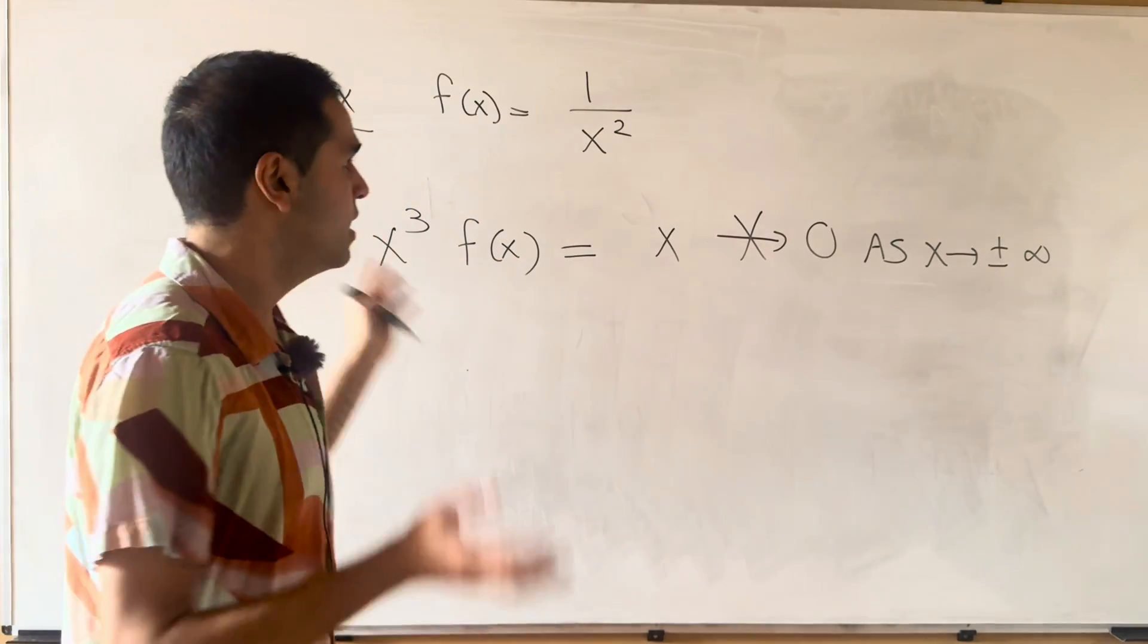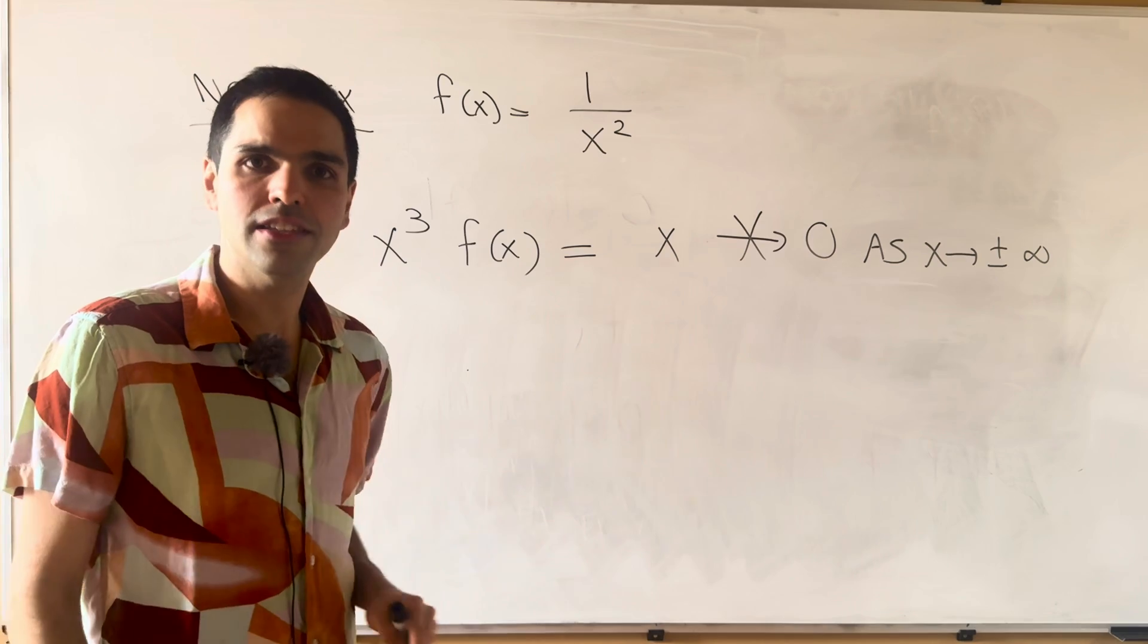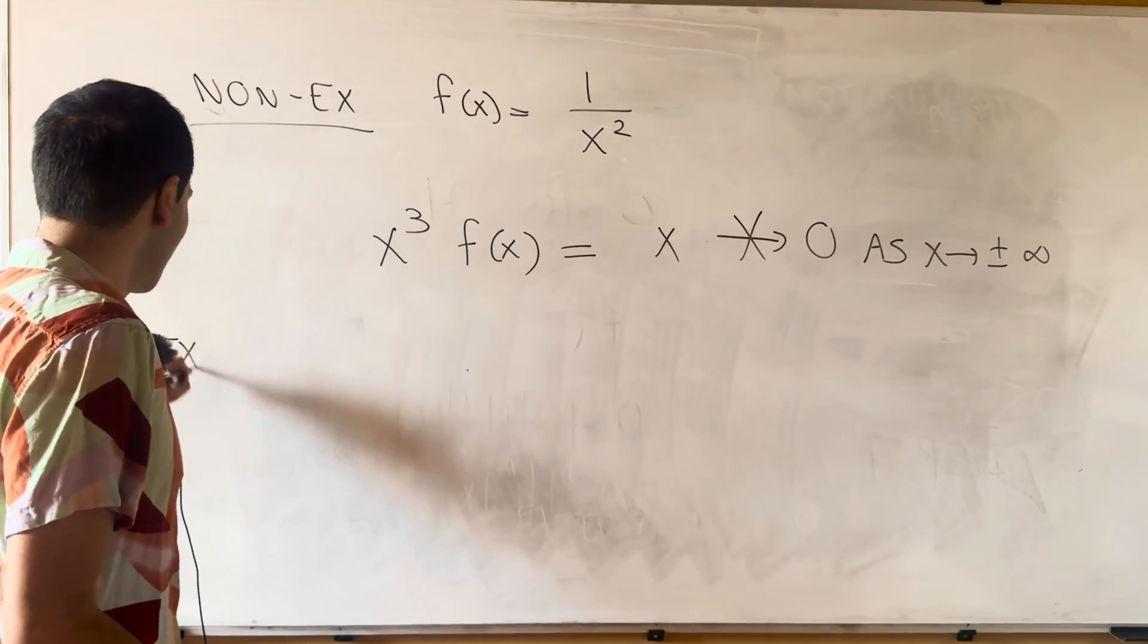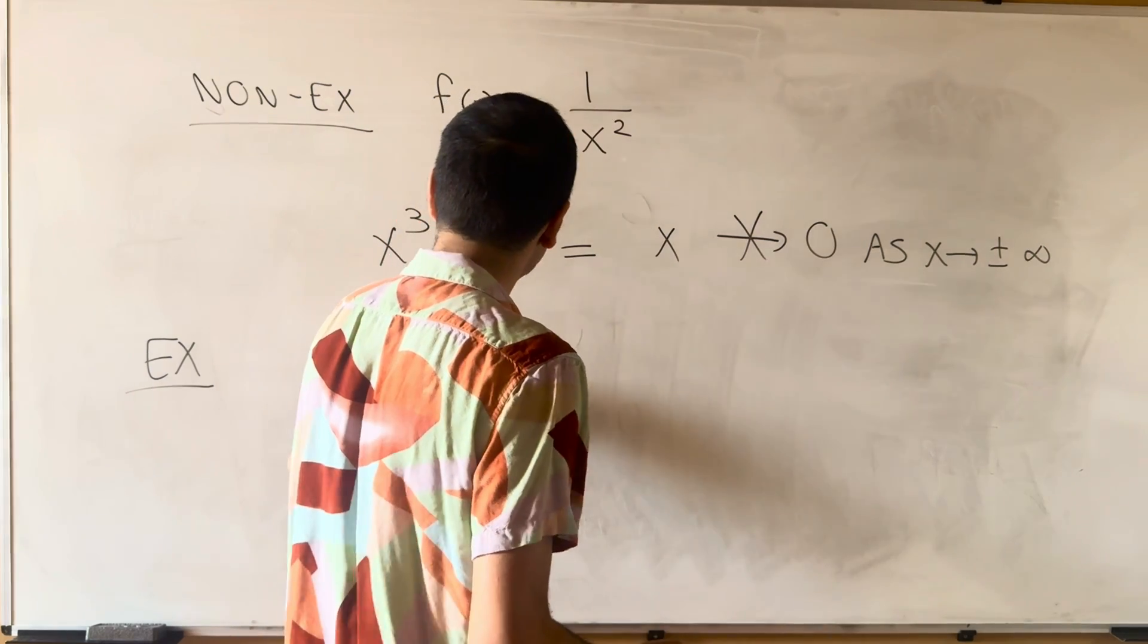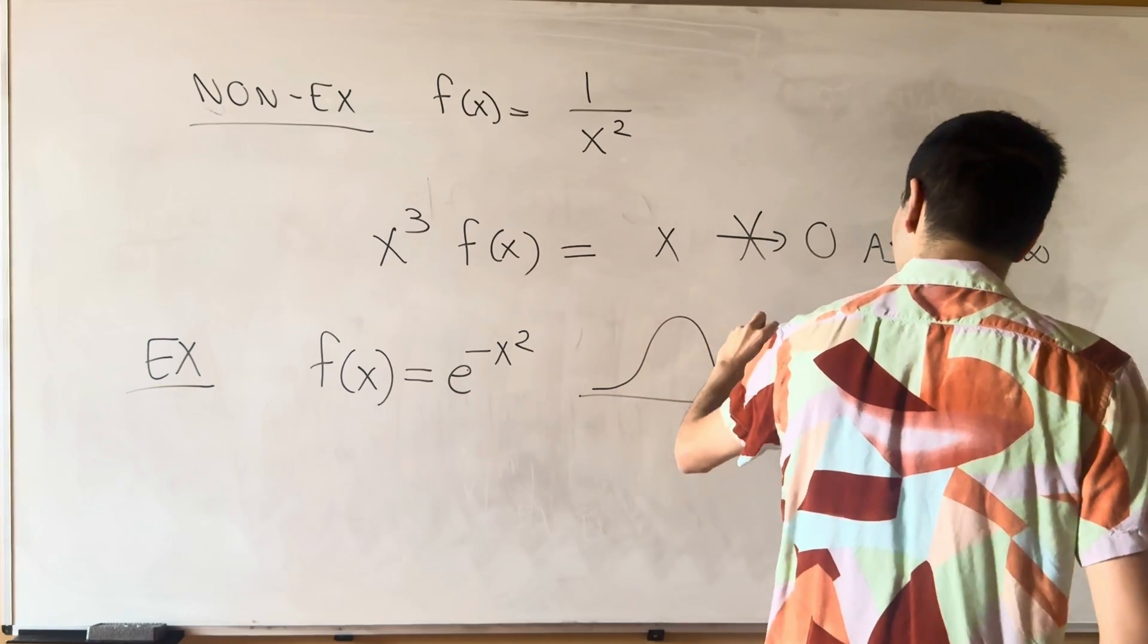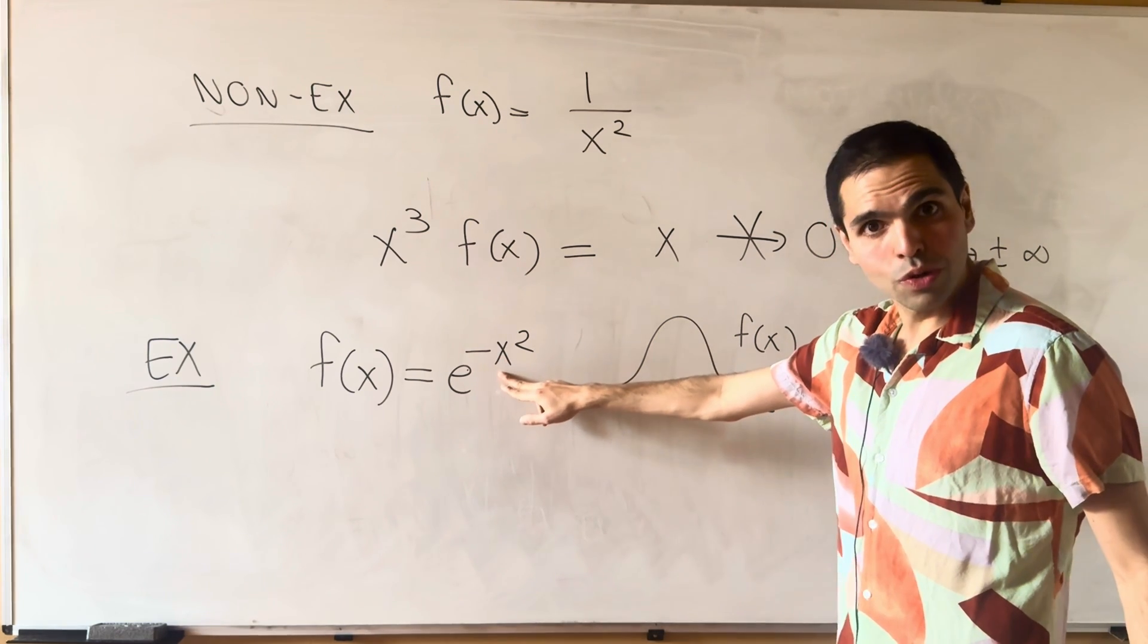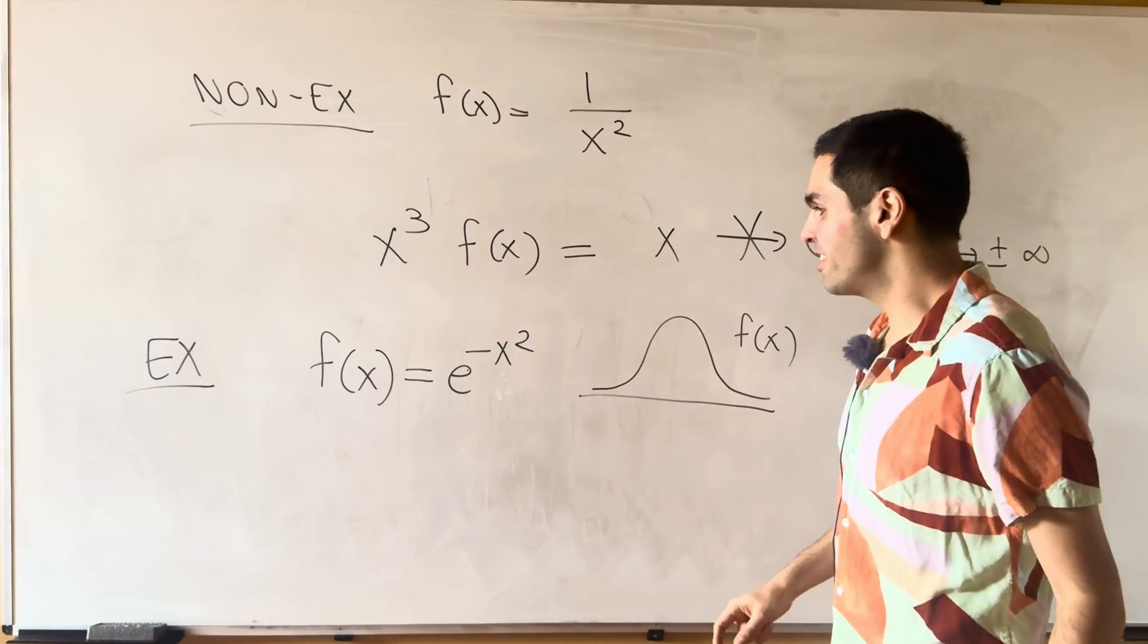So really, it means that if you multiply any power of x with f, that's supposed to go to zero. And of course you may wonder what is an example of this. A very famous example is the Gaussian function, f of x is e to the minus x squared. Once again, this is f of x, so the bell curve, and in fact you can check that. First of all, this function goes to zero, the derivatives go to zero, and any derivative really.